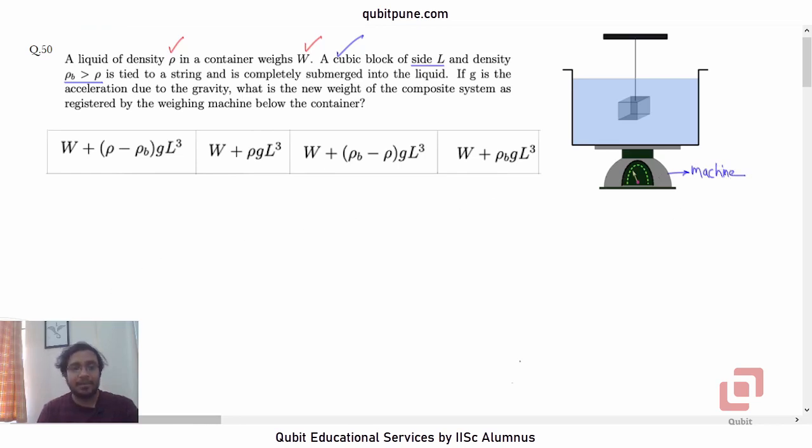Now clearly, the weight of the liquid will be balanced. That will be a part of the reading that you will see on the machine. Now we would like to investigate how much of the weight of the block will be included in the reading.